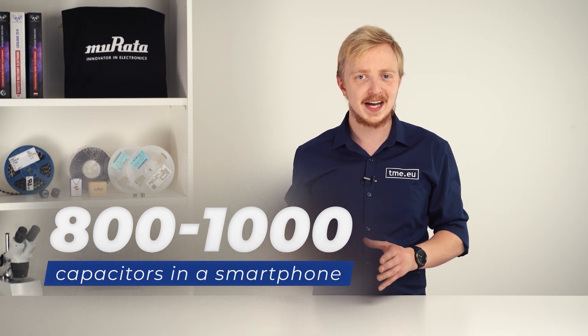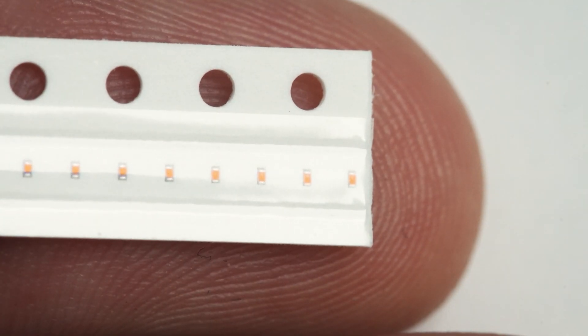In the smartphone alone, there are between 800 and 1000 capacitors. And each of them is made with the new thinner ceramic sheets. Only 0.5 micrometer thin. That is amazing.